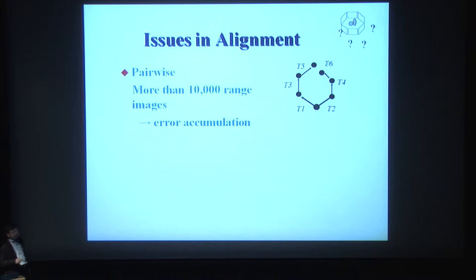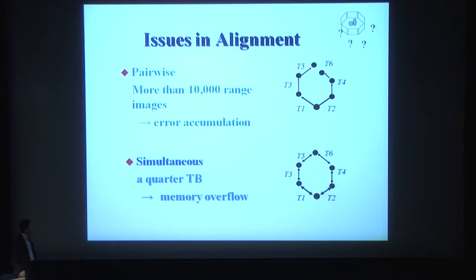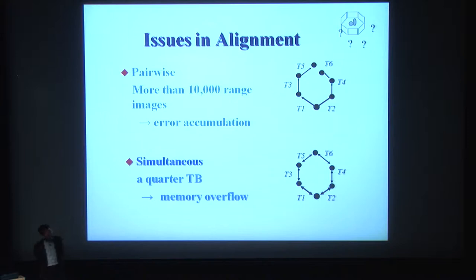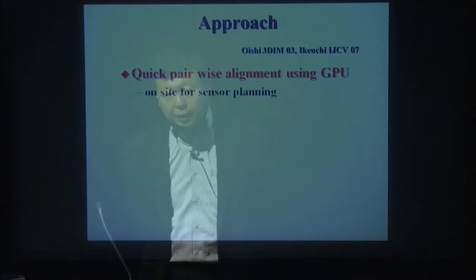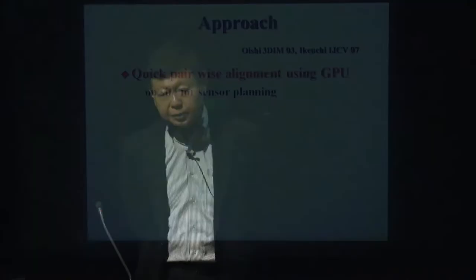There is a solution: load all the data and consider everything together. But with quarter-terabyte data, memory overflow occurs and computational time is approximately one year. I gave this problem to a grad student, noting that a PhD takes three years and a bug costs one year. He came up with a two-step algorithm: a quick pairwise alignment algorithm using GPU for on-site data checking, and then a parallel simultaneous alignment algorithm on a PC cluster, off-site at the university.